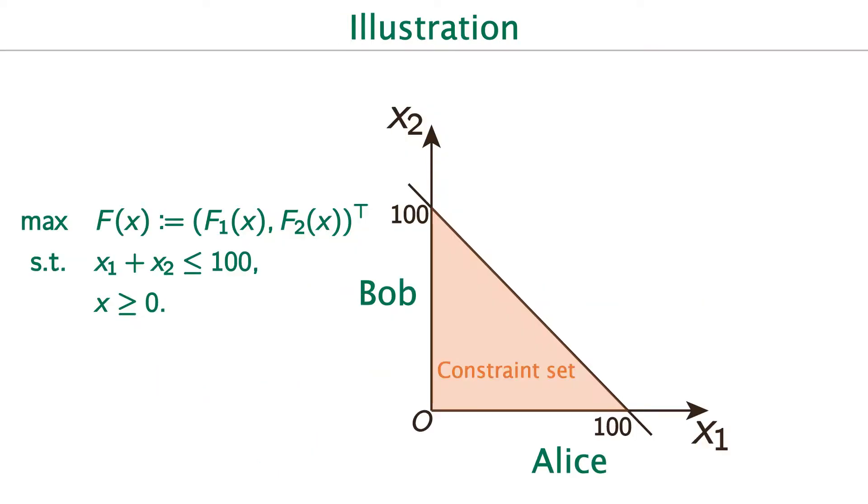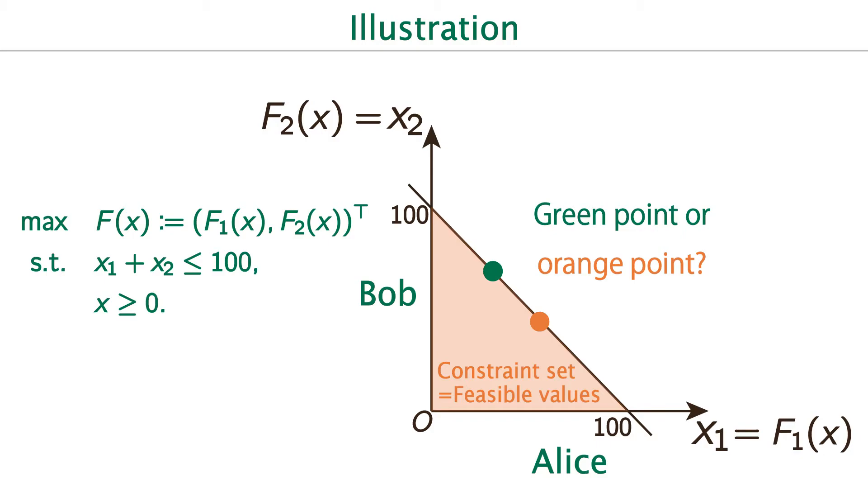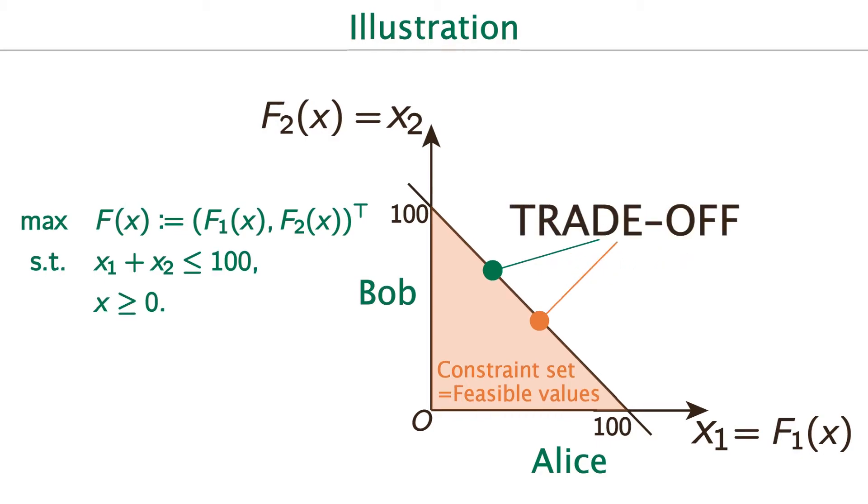Now, let's illustrate this problem. The colored area in this graph represent the constraint set of the problem. For simplicity, assume that f1 of x equals to x1 and f2 of x equals to x2. Then, this graph shows the feasible values of f1 and f2. Then, what point in this graph maximizing f1 and f2? The green point? Or the orange point? If you choose orange point, Alice can drink more water than green point, but instead, the amount of water Bob can drink decreases from green point. We call this type of relationship a trade-off.